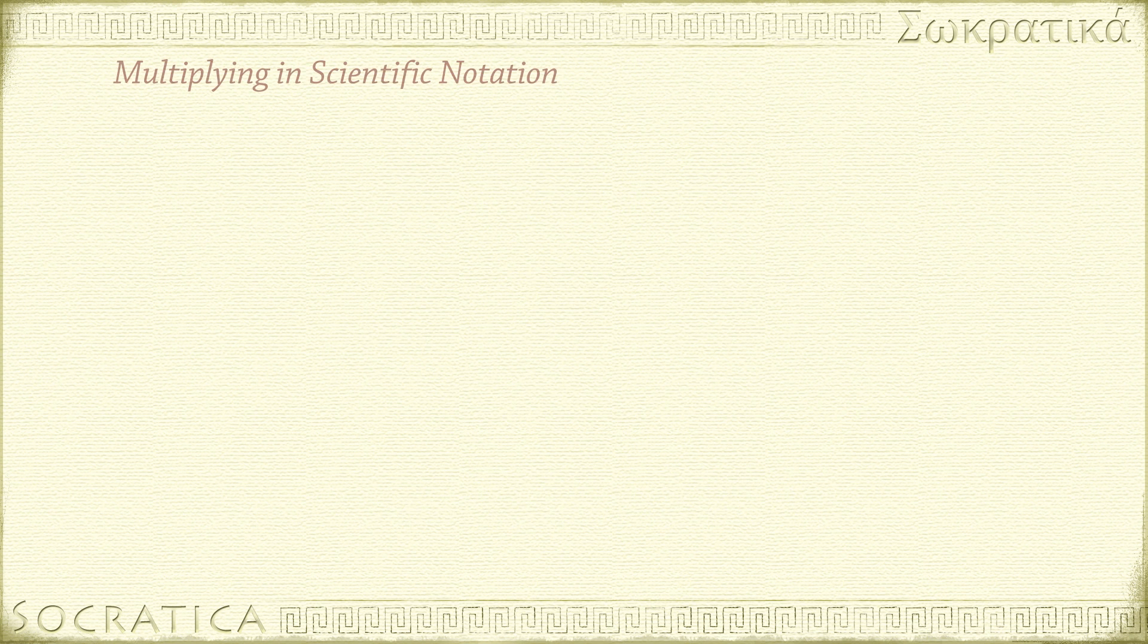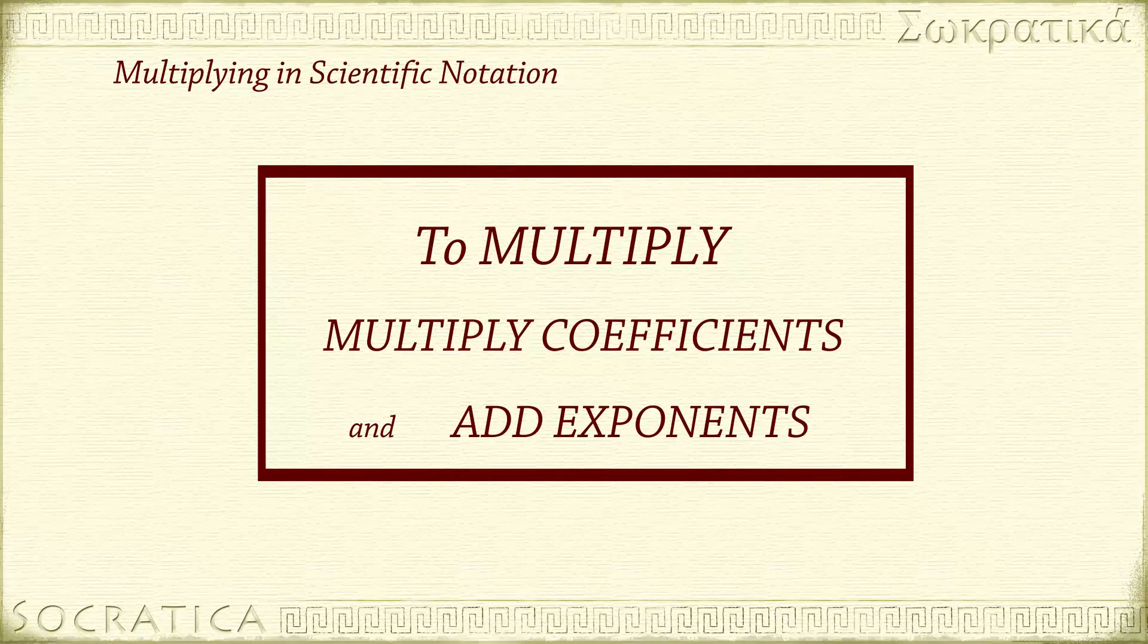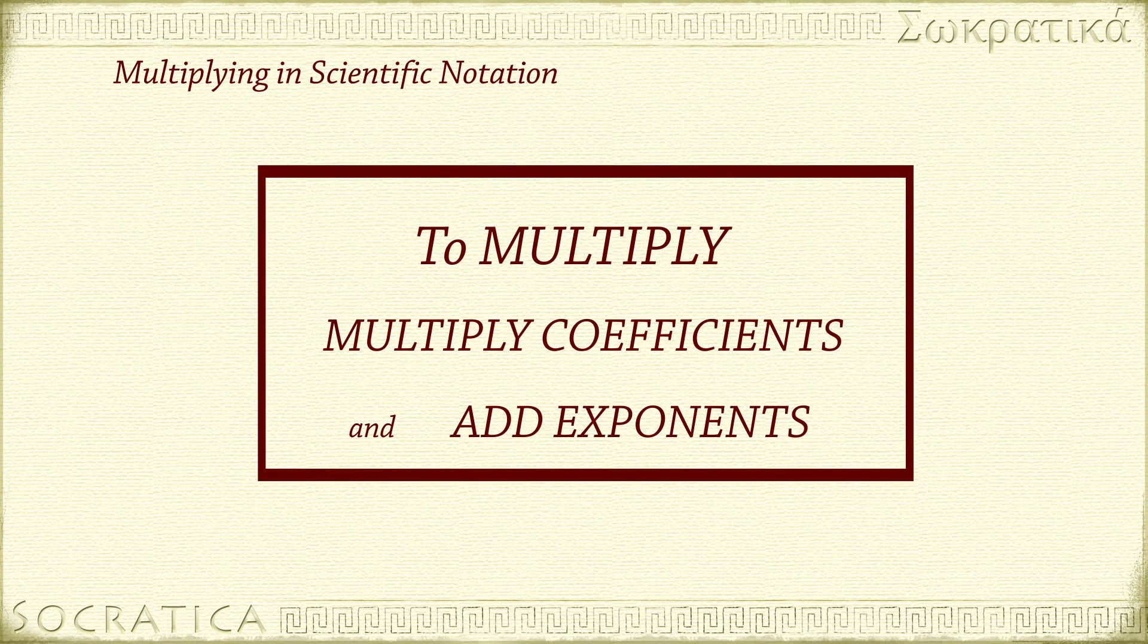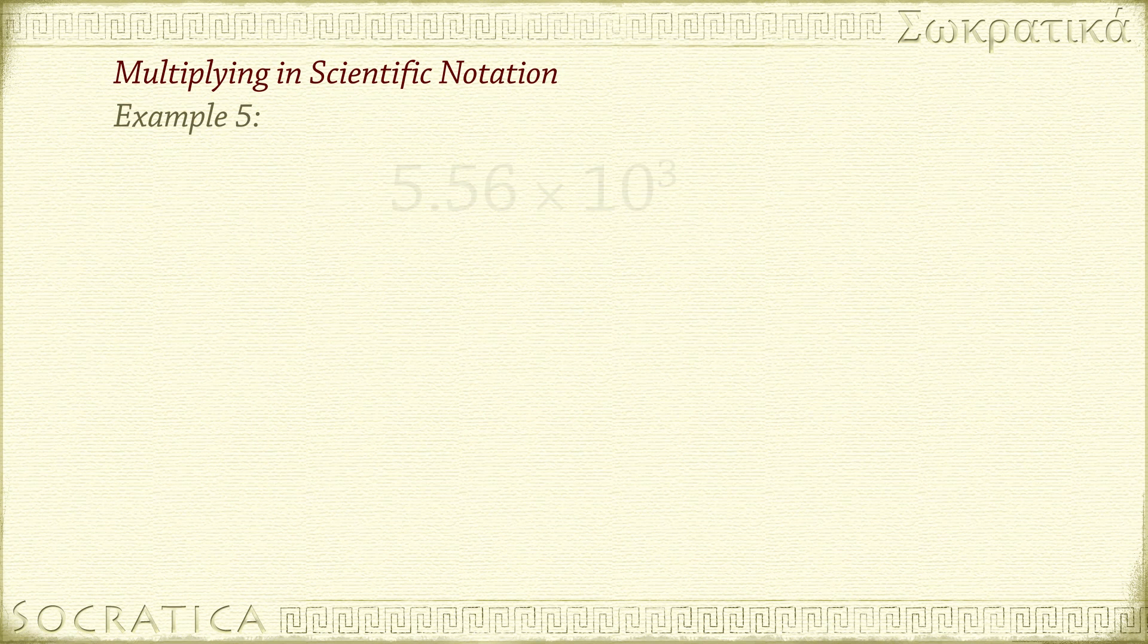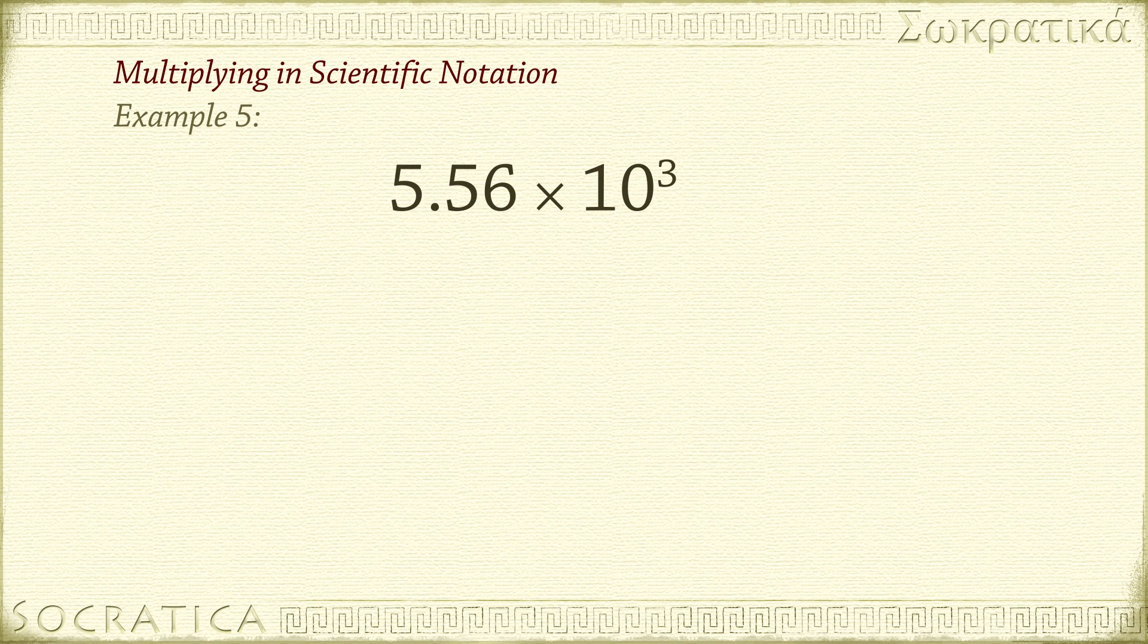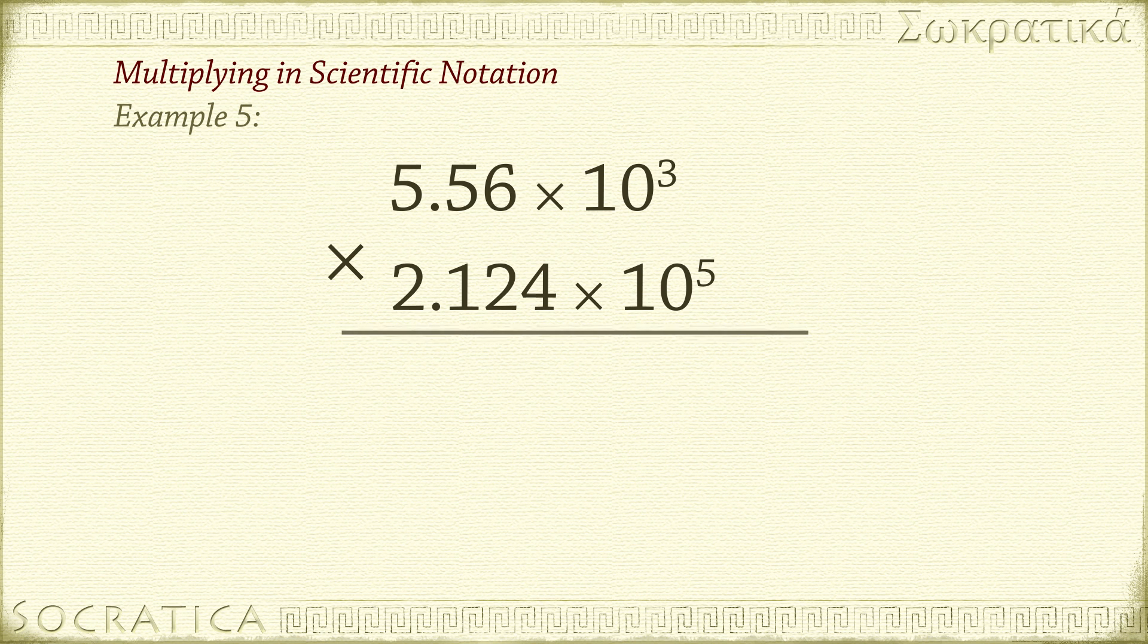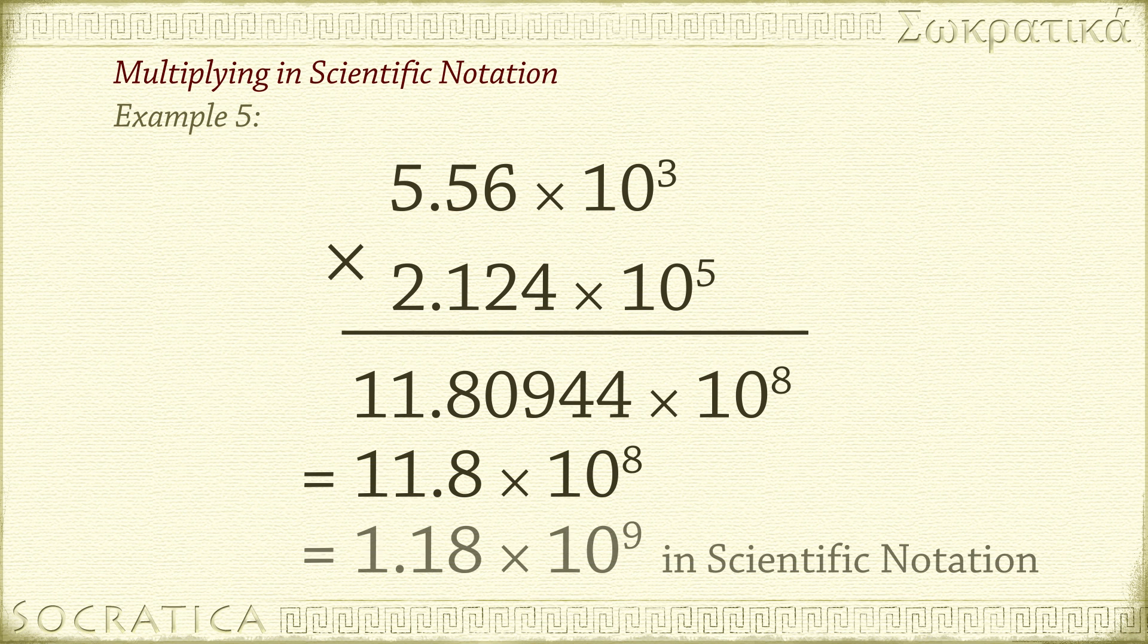To multiply two numbers in scientific notation, you multiply their coefficients and add their exponents. Keep the same number of significant digits as the number with the fewest significant digits. For example, 5.56 times 10 to the negative 3 times 2.124 times 10 to the negative 5 equals 11.80944 times 10 to the negative 8. Round to three sig figs: 11.8 times 10 to the negative 8. Again, if you need a refresher on sig figs, we have a video all about those rules.